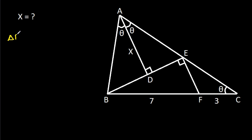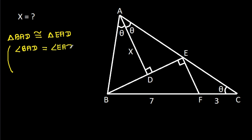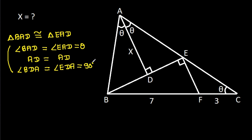Triangle BAD will be congruent to triangle EAD, because we have angle BAD is equal to angle EAD, that is theta, and AD is common, and angle BDA is equal to angle EDA, that is 90 degrees. Hence BD will be equal to ED.